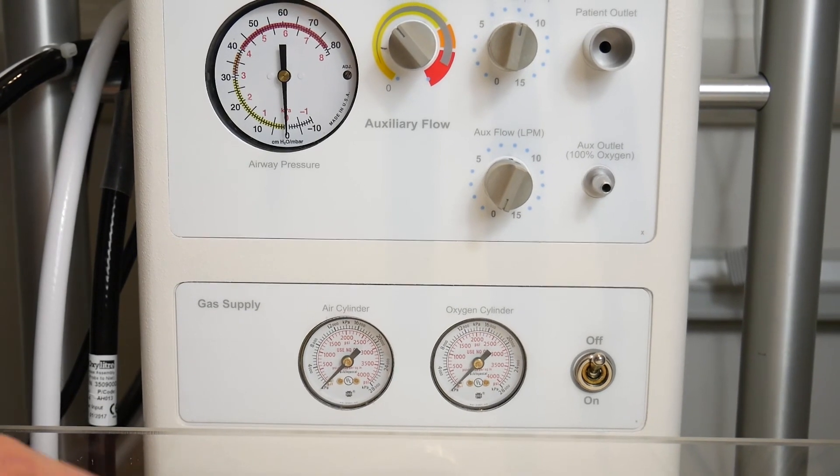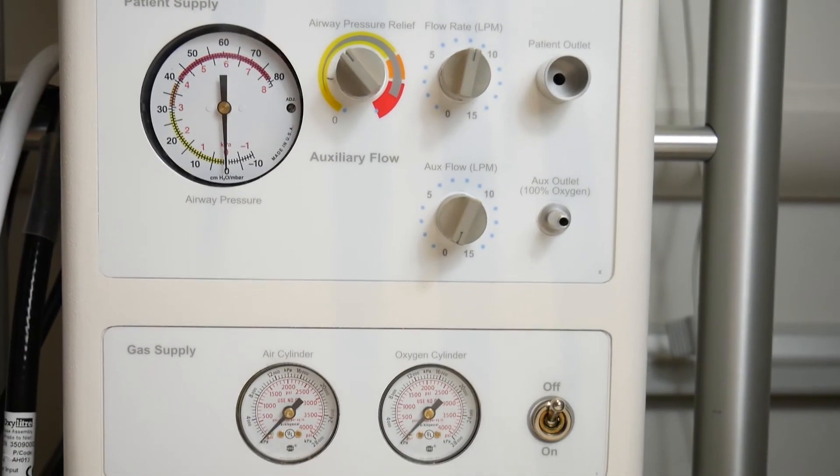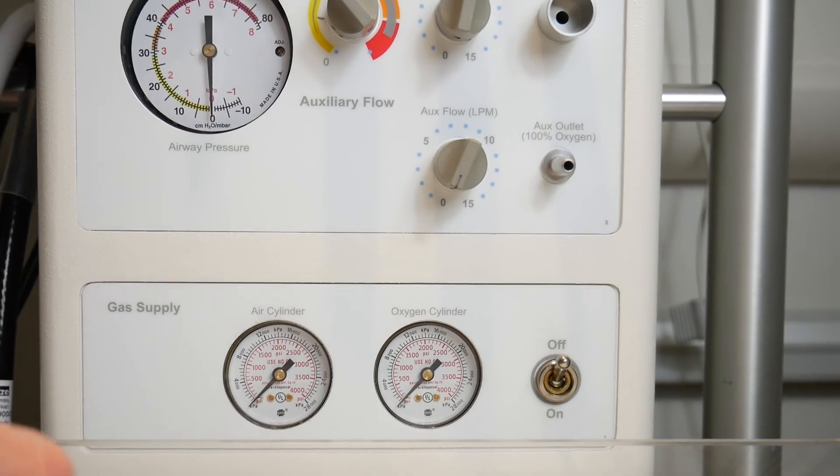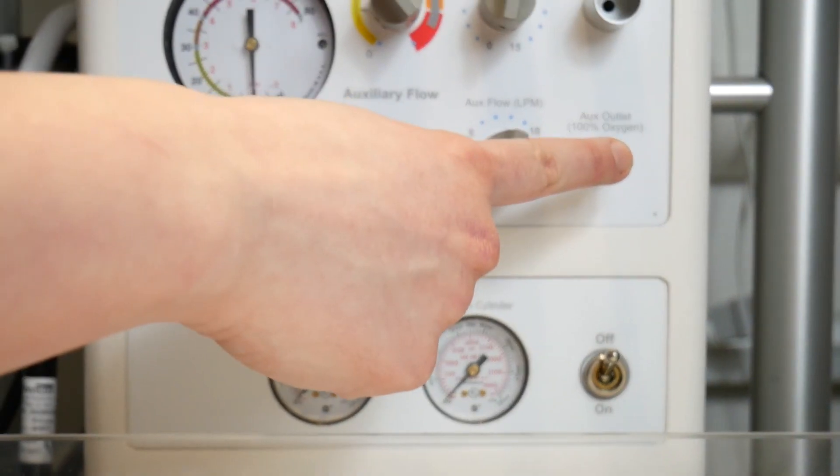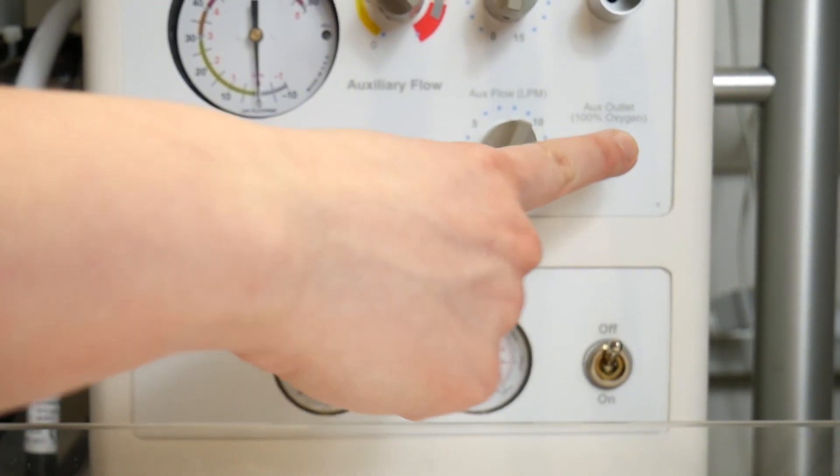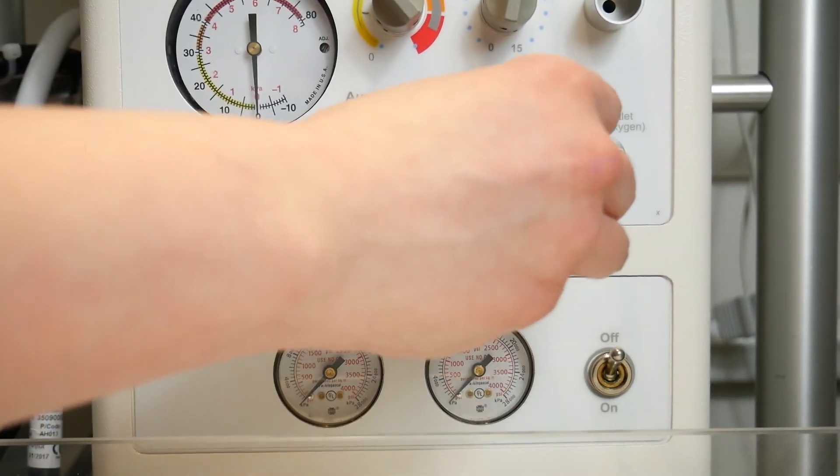Below this you have an alternative gas outlet that always runs on 100% oxygen. You can attach a Waters or anaesthetic circuit here and you adjust the flow rate in the same way as above using this dial.